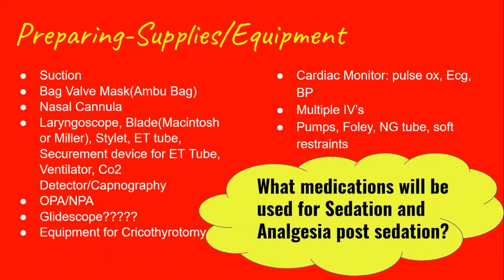So as far as the equipment we've discussed, we have suction, we have a nasal cannula, we have a non-rebreather, and we have ambu bags ready. You need to have your patient on a cardiac monitor, connected to SpO2, ECG, and blood pressure. You need to have at least one good working IV, but if you can have two, even better.